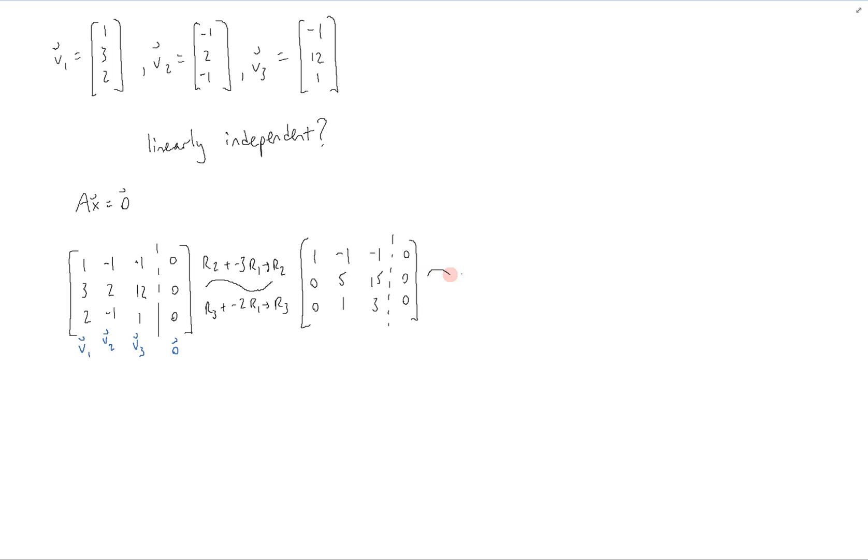Now we're going to scale row 2 by 1 fifth to give us this. Then we're going to perform an operation on row 3. So we'll take row 3 plus negative row 2, and that gives us this.